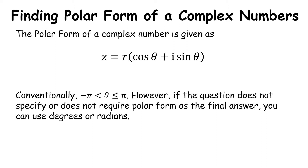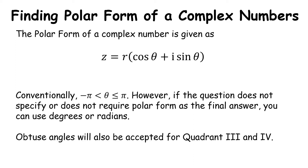If the question doesn't specify or doesn't require polar form as your answer, you can use degrees or radians, and you don't have to use negative angles if you don't want to — you can keep them all positive. Most of the more recent Leaving Cert questions are moving away from forcing students to use radians, so you're absolutely fine to use obtuse angles in quadrant three and quadrant four rather than positive and negative. Whatever works best for you.